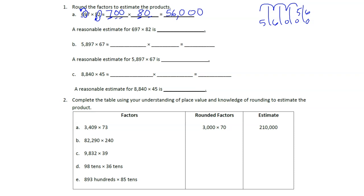Now I have seven hundreds and eight tens, so seven times eight gives me 56. That's 56 times 10 × 10 × 10 — three zeros — giving us 56,000. So a reasonable estimate for 697 × 82 is 56,000.